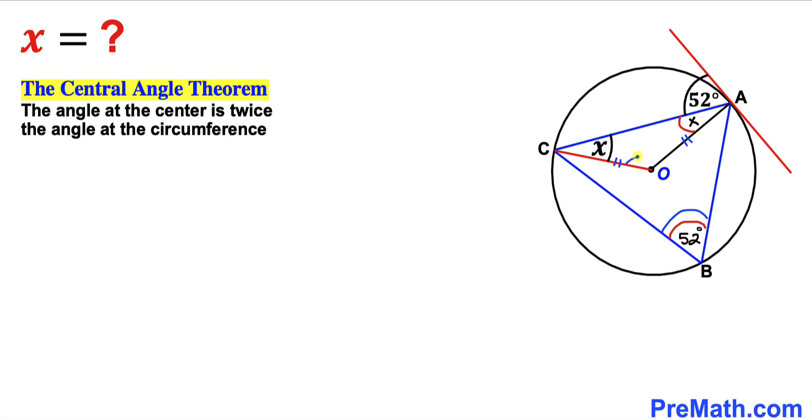And this is our angle at the center. So therefore, if this angle is 52 degrees, then the angle at the center is going to be twice as much. That is going to be 104 degrees, this angle at the center.